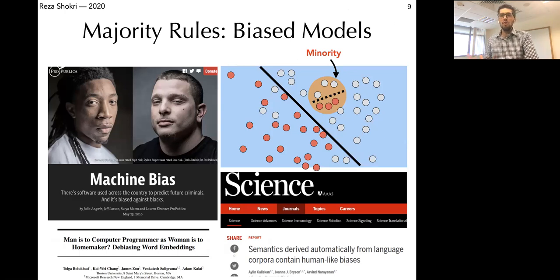The decisions made by the model are going to be discriminatory against the minority group. Or if there are some type of bias in the training data, they would be influencing the model and the model is going to be biased against the data at test time.